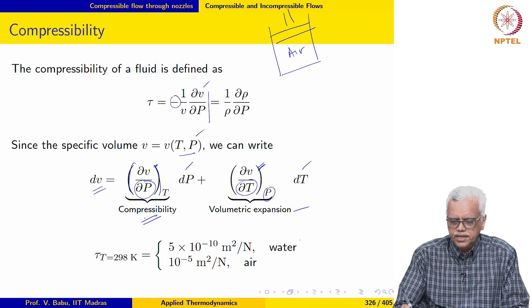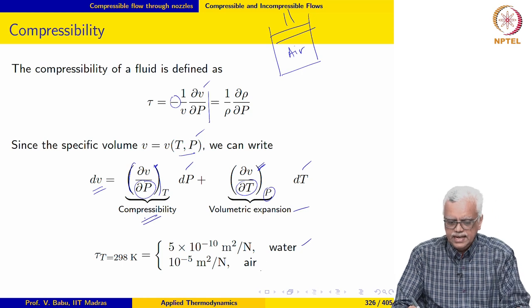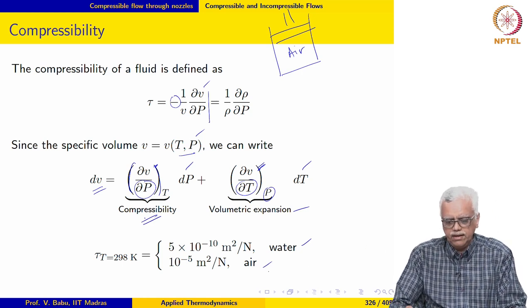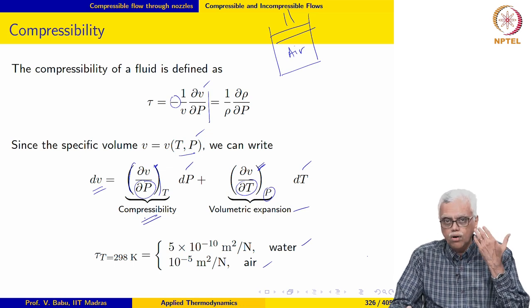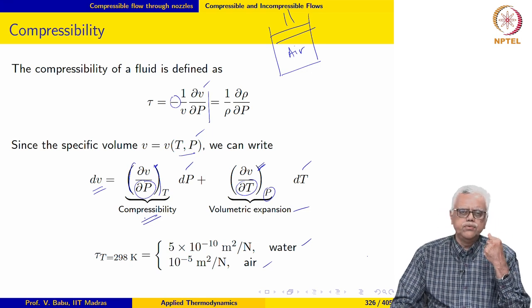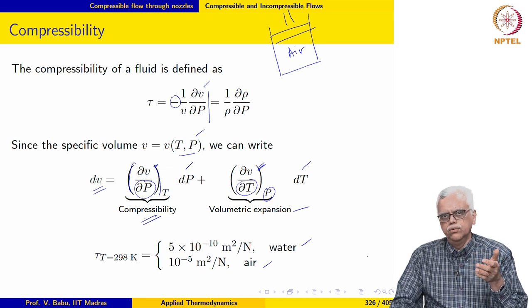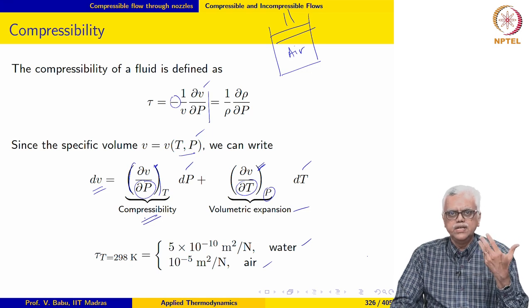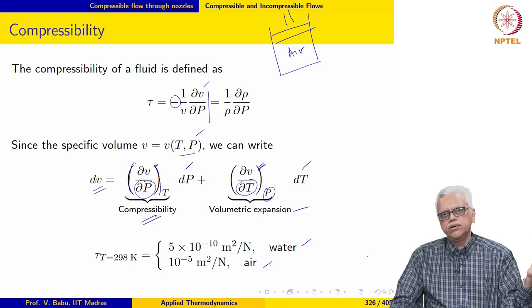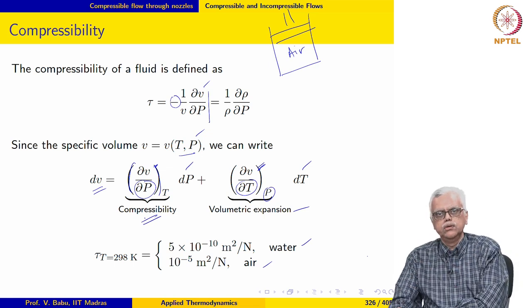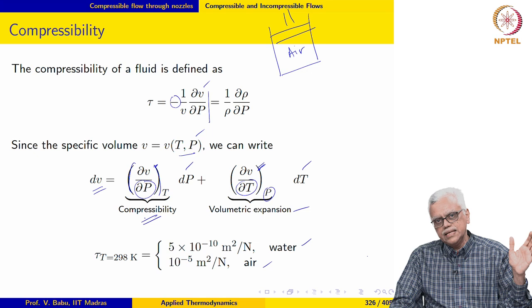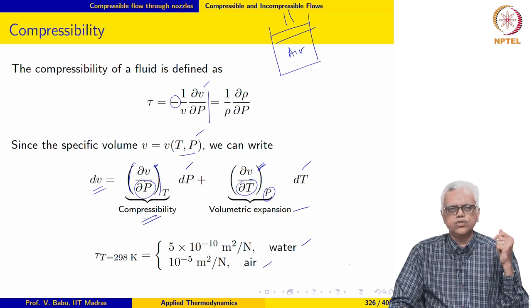The isothermal compressibility of water is 5 times 10 to the minus 10, while the isothermal compressibility of air at 298 Kelvin is 10 to the minus 5. So the isothermal compressibility of air is 5 orders of magnitude more than that of water. This raises the question: does this mean that any flow of air should be considered compressible? For example, flow of air over an automobile, over an airfoil or wing, in a nozzle, or in a turbomachinery blade passage — do we classify all these as compressible simply because the isothermal compressibility of air is so high?